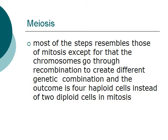Meiosis is very similar to mitosis — most of the steps are very much the same — with the exception that the chromosomes go through recombination to create different genetic combinations, and the outcome is four haploid cells instead of two cells as in mitosis.